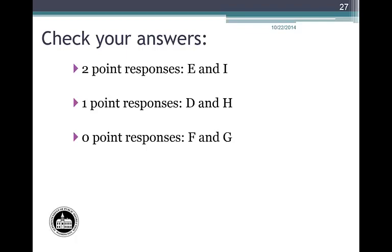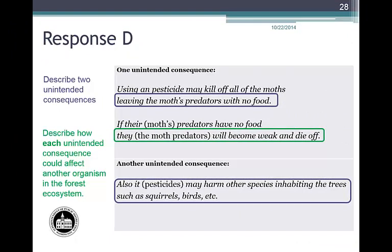Let's review Student Response D. The first unintended consequence — 'leaving the moth's predators with no food' — is plausible, and the effect — 'they will become weak and die off' — is also plausible. One unintended consequence earns one point. The second unintended consequence — 'it may harm other species inhabiting the trees such as squirrels, birds, etc.' — is plausible, but no description of the effect on another organism is provided. That consequence does not earn a point. Response D earns a total of one point.